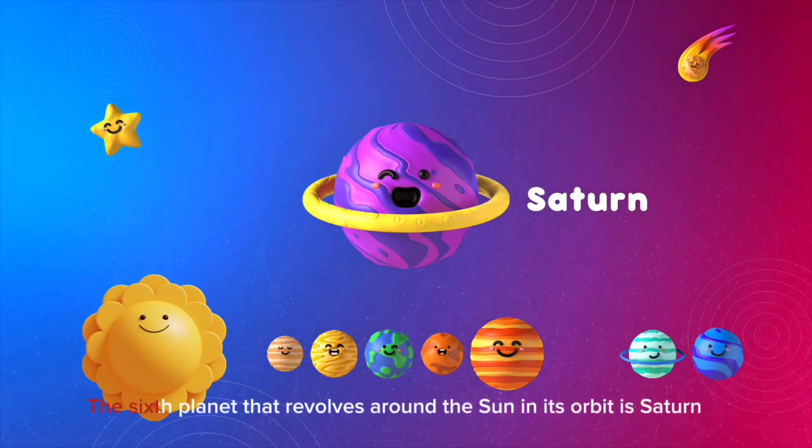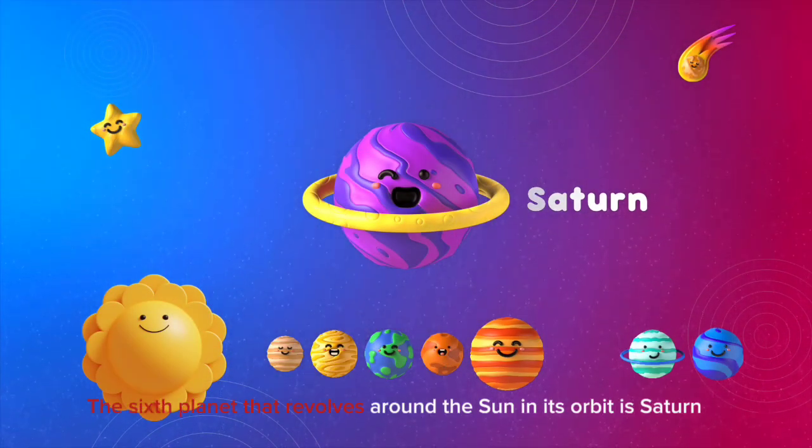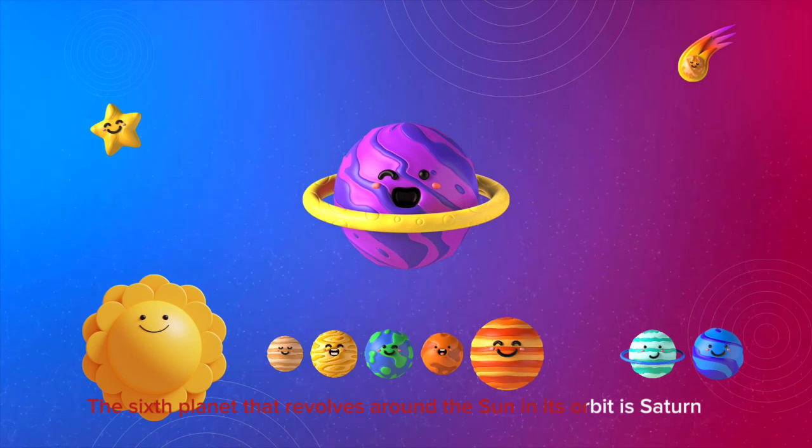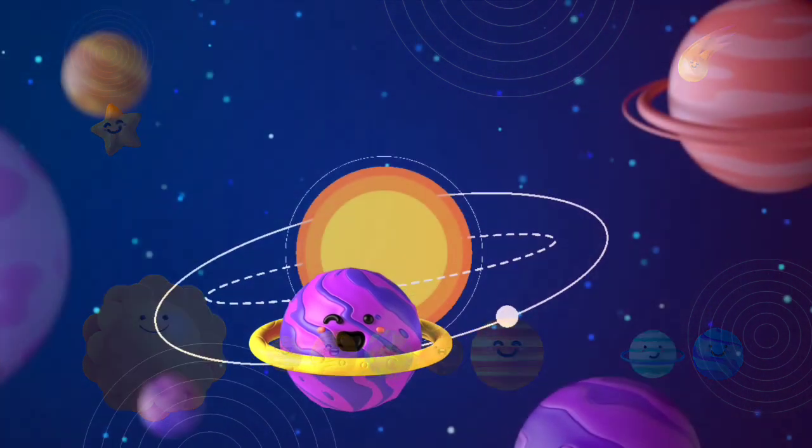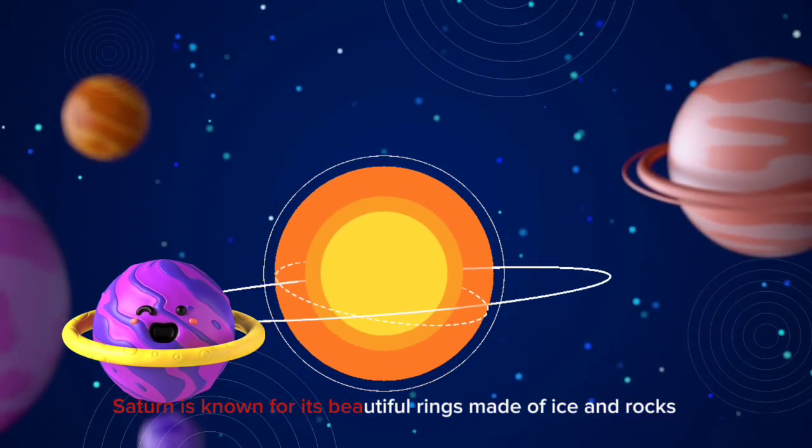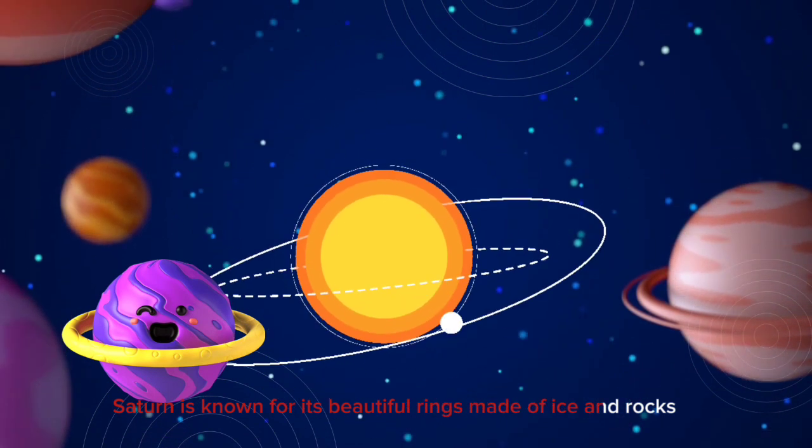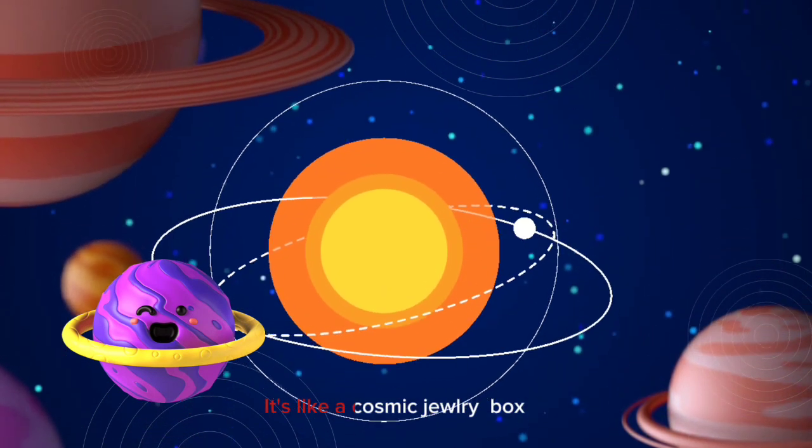The sixth planet that revolves around the sun in its orbit is Saturn. Saturn is known for its beautiful rings made of ice and rocks. It's like a cosmic jewelry box.